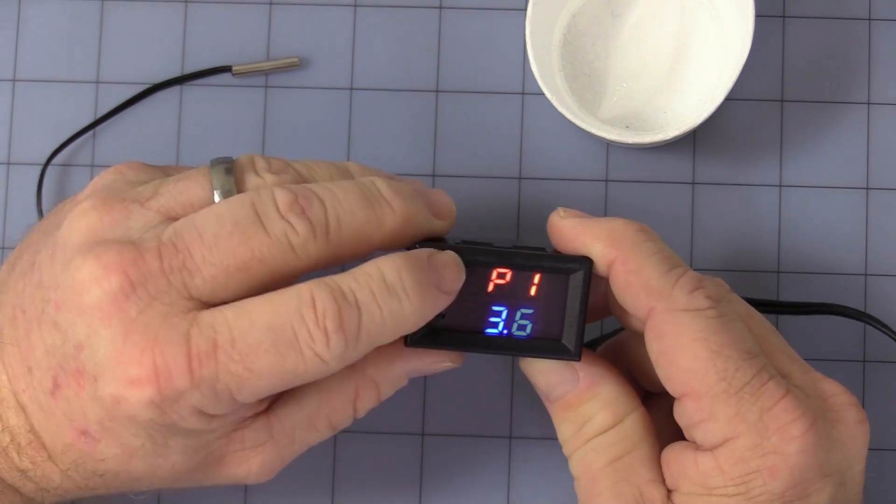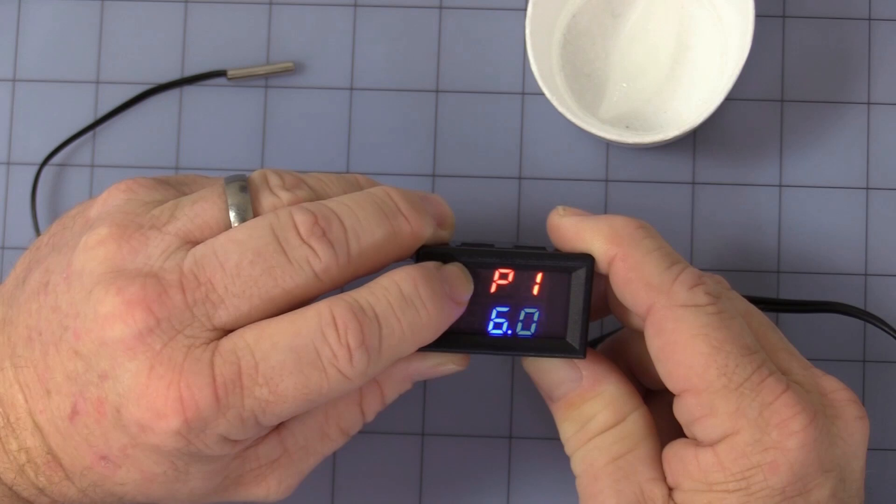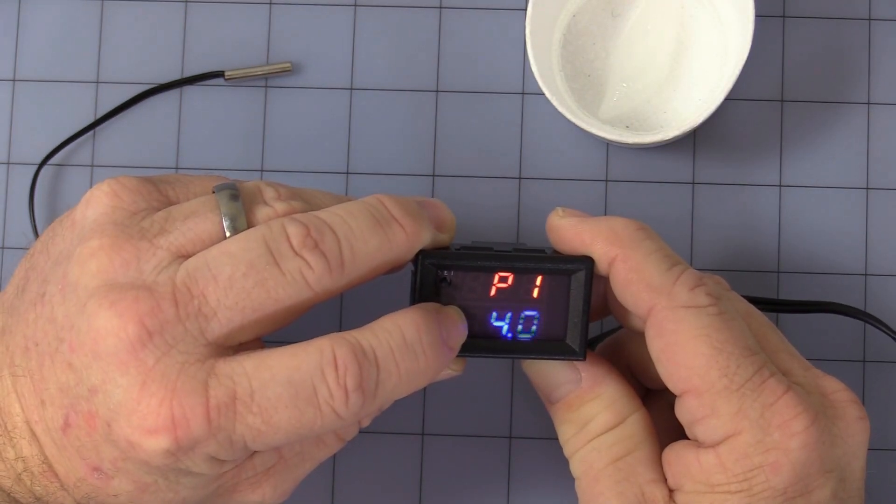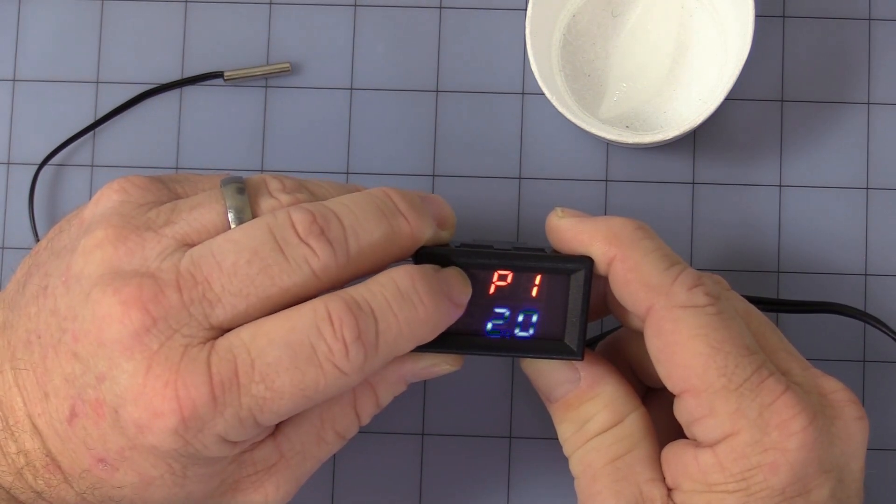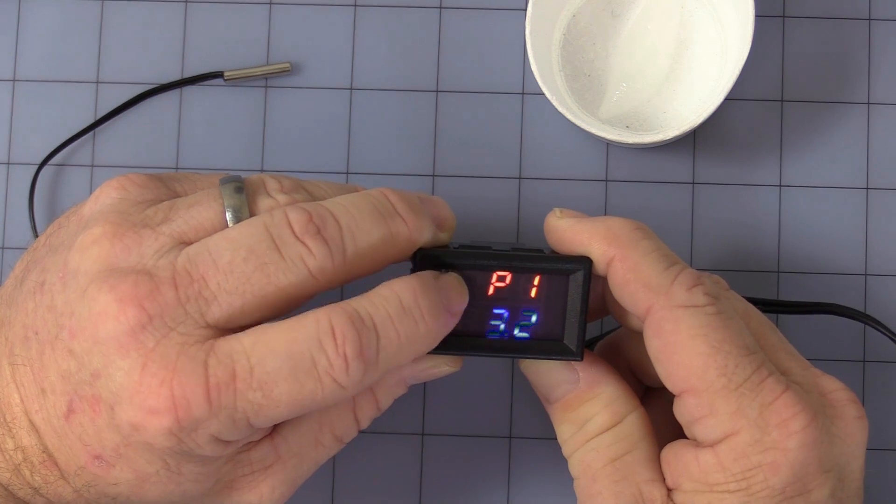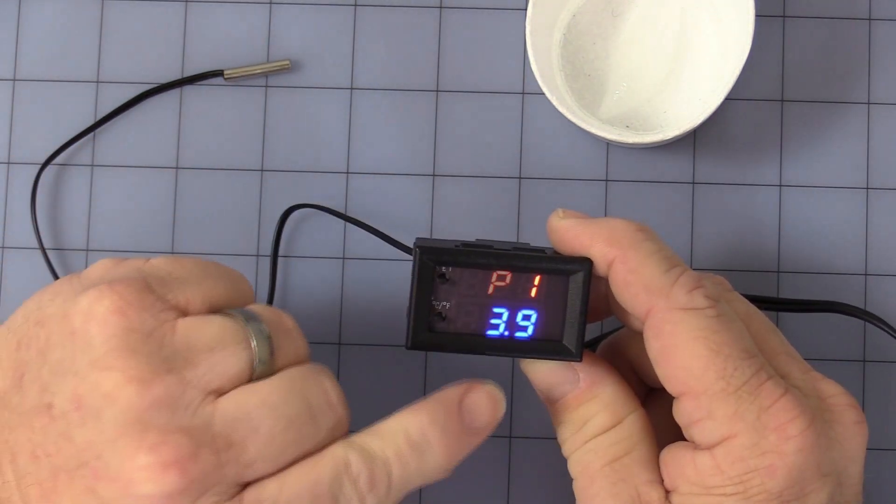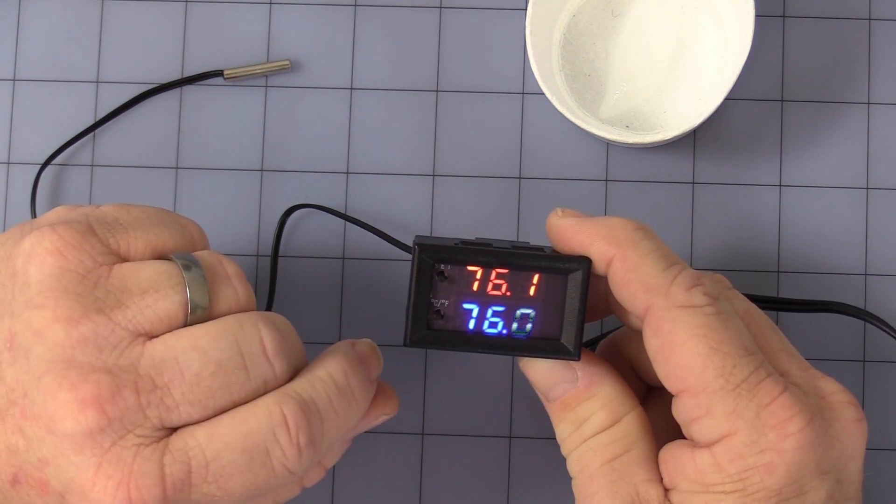There again, press both buttons to enter the program. Once it starts flashing, this is your hysteresis. You can change it from 0.1 to 30 degrees hysteresis. Then, when you get to your set point, just leave it. And when it stops flashing, it will automatically go back into running the program.